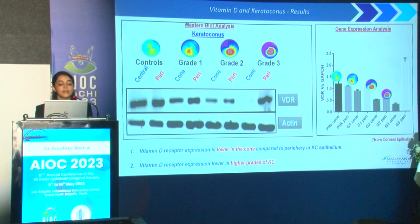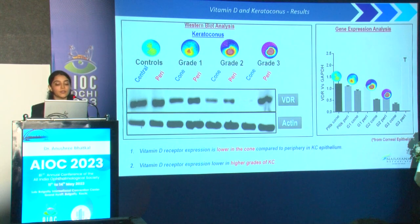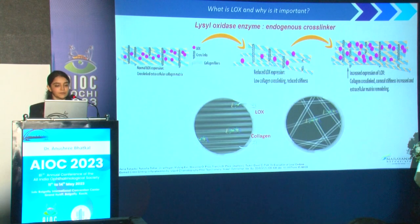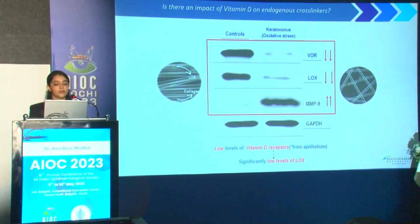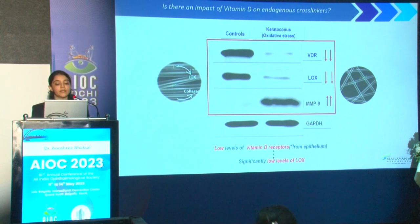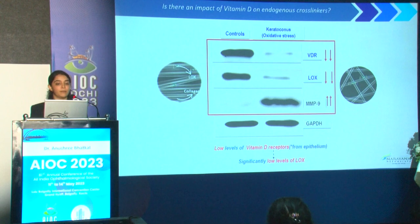We observed that vitamin D receptor expression was lower in the cone area compared to the periphery in keratoconus epithelium, and lower in higher grades of KC. We know that LOX (Lysyl oxidase enzyme) is an endogenous cross-linker whose expression is reduced in keratoconus patients. We induced keratoconus by creating oxidative stress in cultured epithelial cells and again observed low levels of vitamin D receptors, significantly low levels of LOX, and increased expression of MMP9.